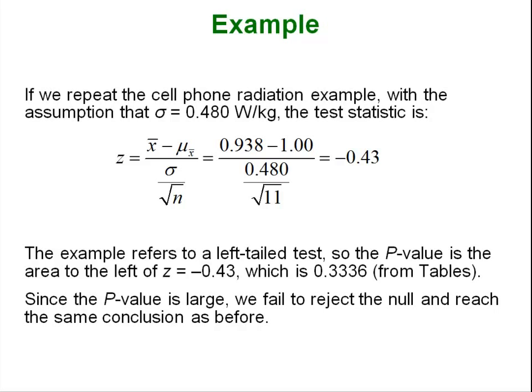Because this p-value was bigger than our 0.05 again we failed to reject. So same result. And that's it guys. That's testing claims about a mean.